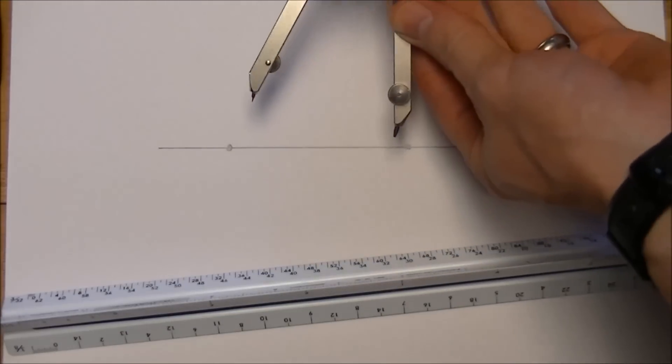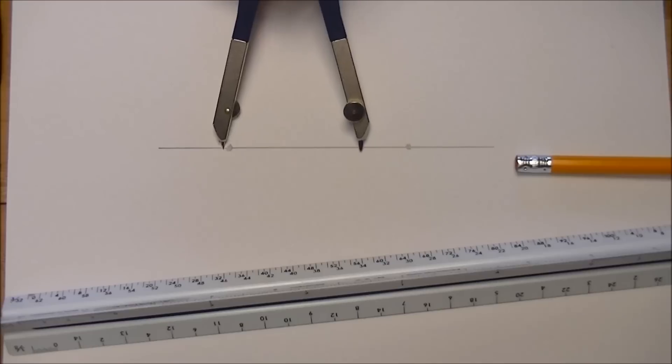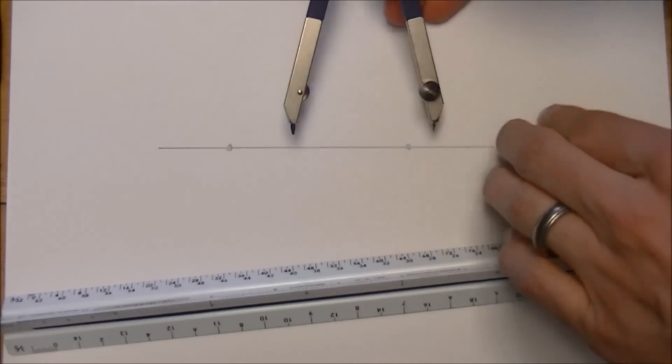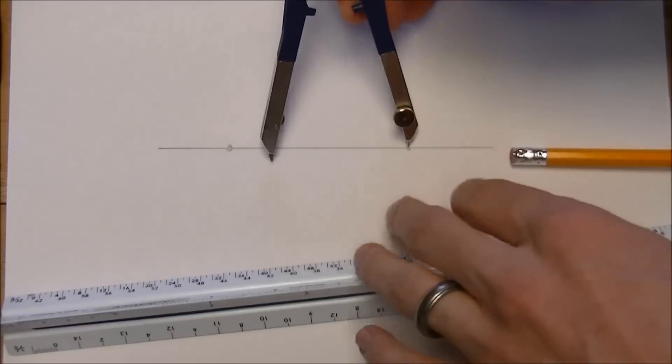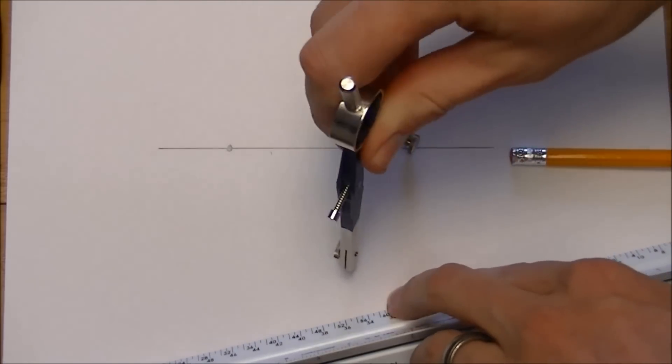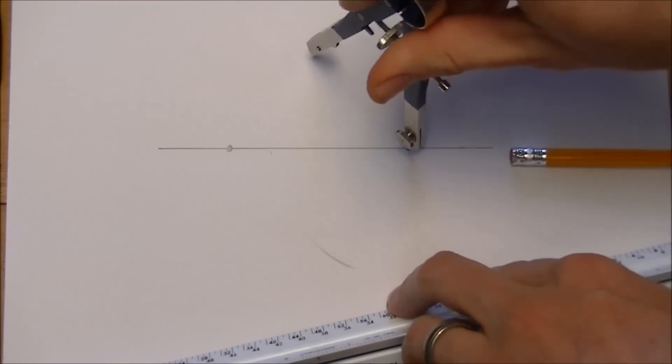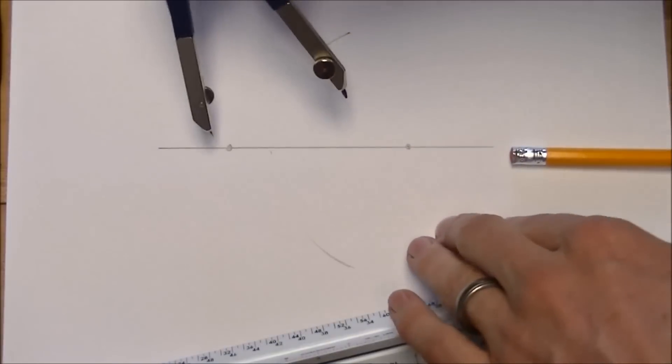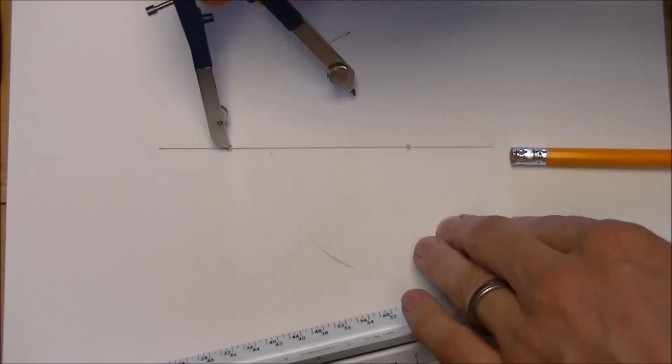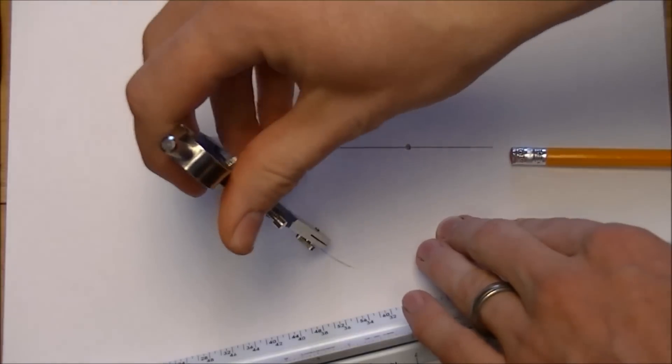To do that, you need to spread the compass out so that it is more than halfway between those two points, and then we'll make some marks above and below the line, and from the second point above and below.